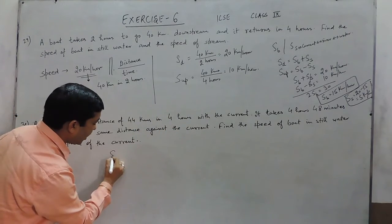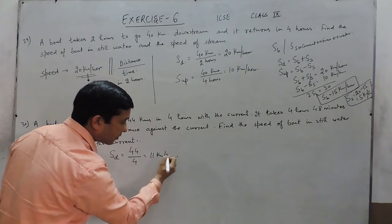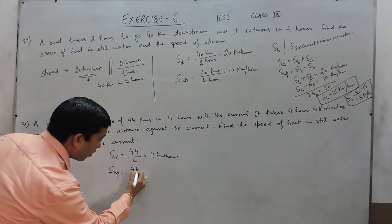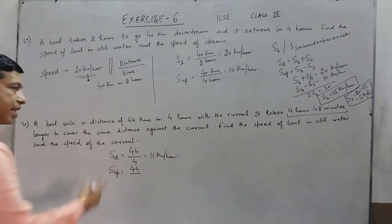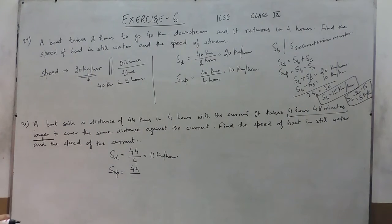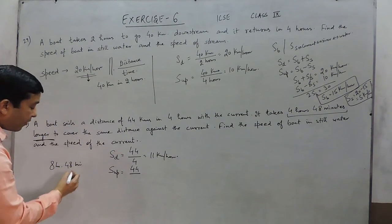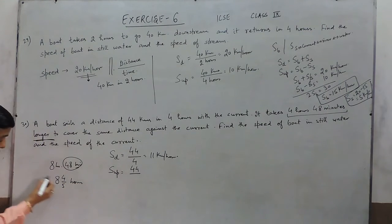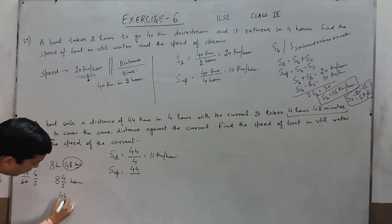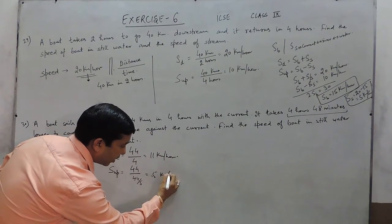Since question 29 and 30 are the same, we follow the same procedure. Speed downstream here is 44 divided by 4, which is 11 km per hour. The important thing is that the upstream journey takes 4 hours 48 minutes longer to cover the same distance. Longer means it is excess time, so the total upstream time is 8 hours 48 minutes. Converting 48 minutes into hours gives 48/60, which simplifies to 4/5 hours, so the total time is 44/5 hours. Using this, the speed upstream comes out to be 5 km per hour.